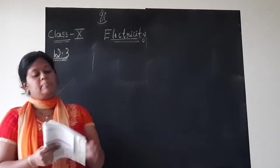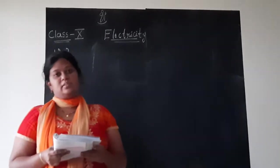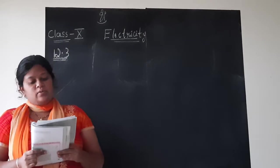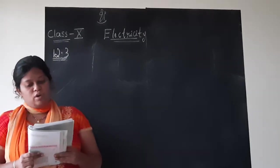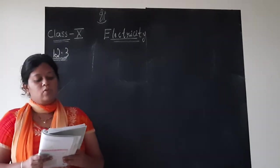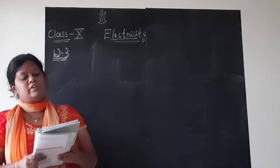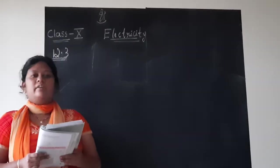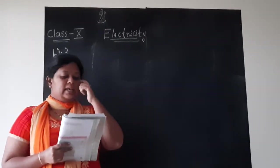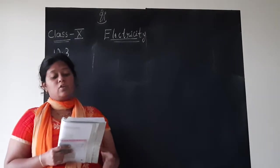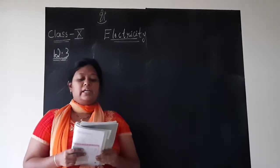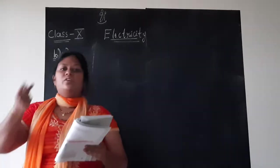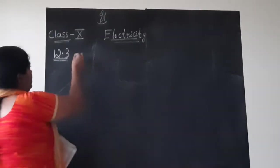So children, first we should solve example 12.3 in your page number 102 of your textbook. Question is, how much current will an electric bulb draw from a 220 volt source if the resistance of the bulb filament is 1200 Ohms? In the second part, how much current will an electric heater coil draw from a 220 volt source if the resistance of the heater coil is 100 Ohms? So let us take the first part, that is A.